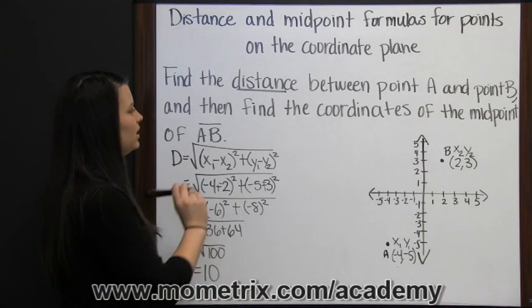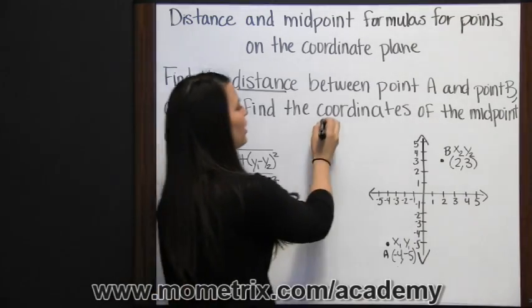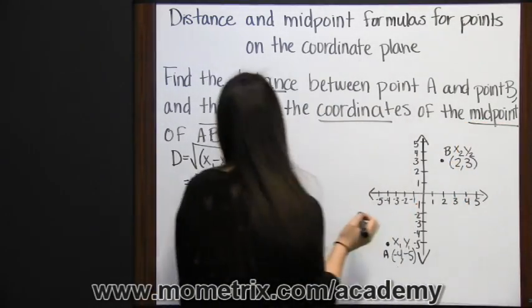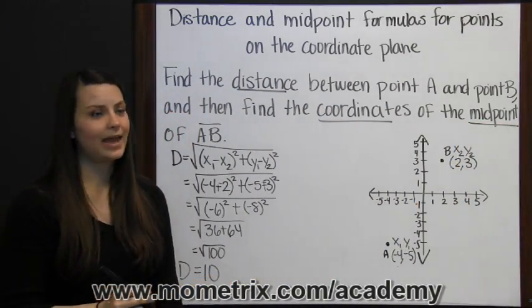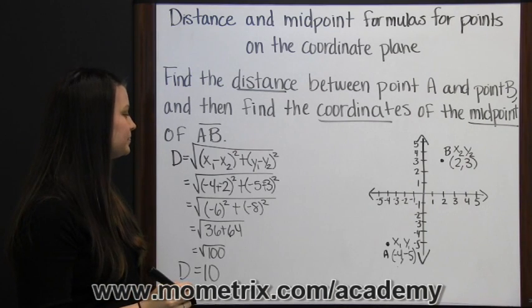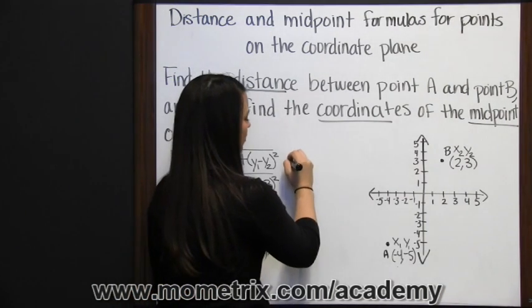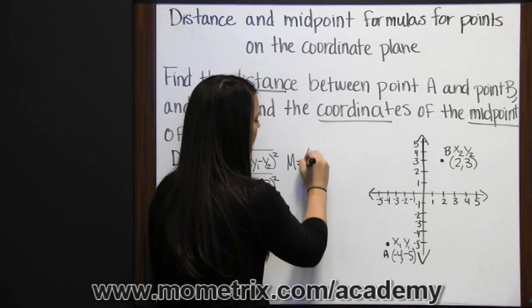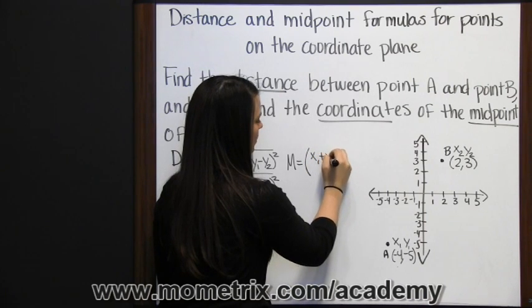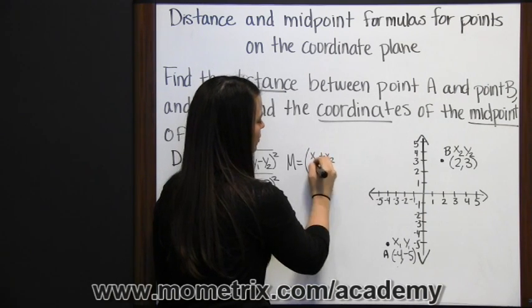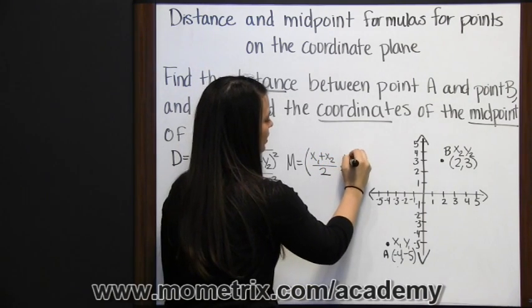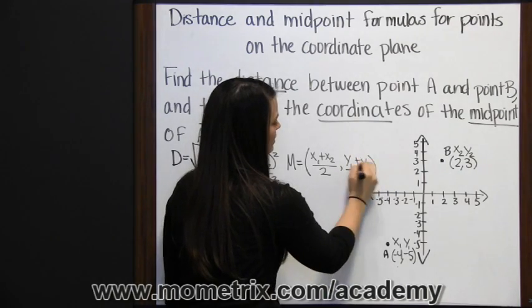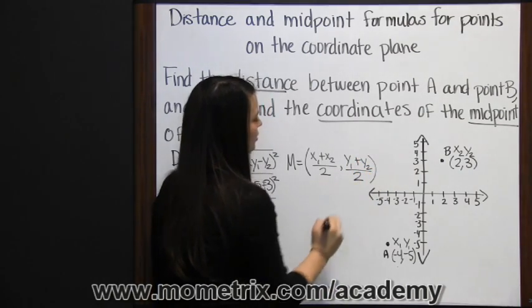The second thing we needed to do was find the coordinates of the midpoint of segment AB. The midpoint formula is where you add your x's — x1 plus x2 — and divide that by 2, and add your y's and divide that by 2.